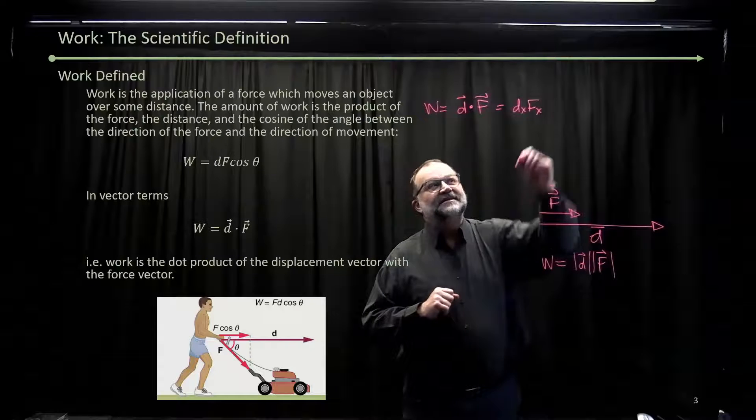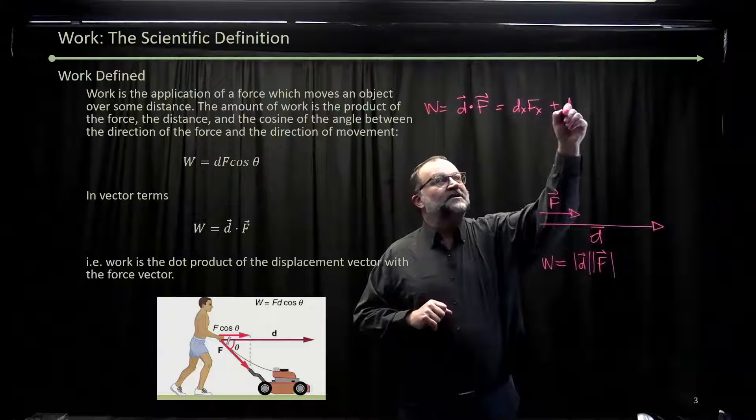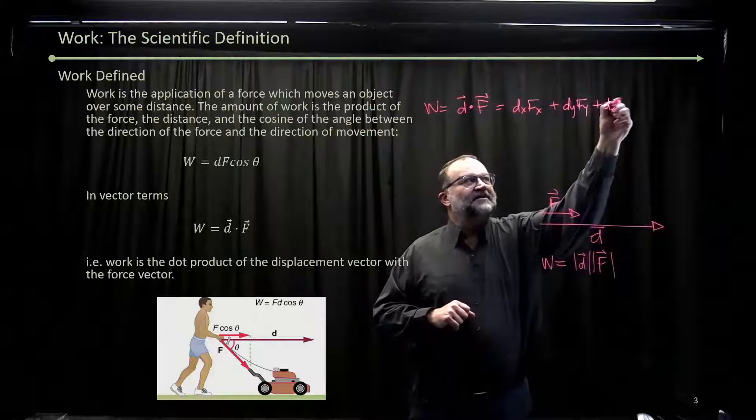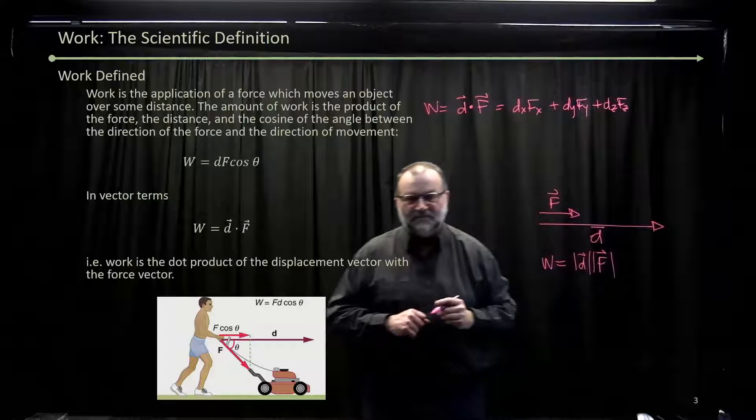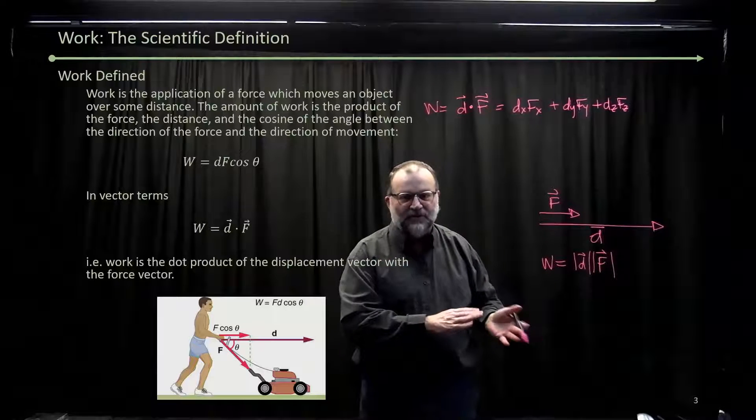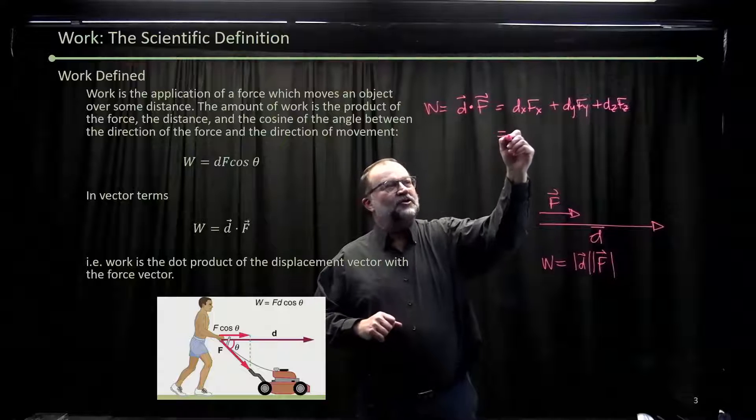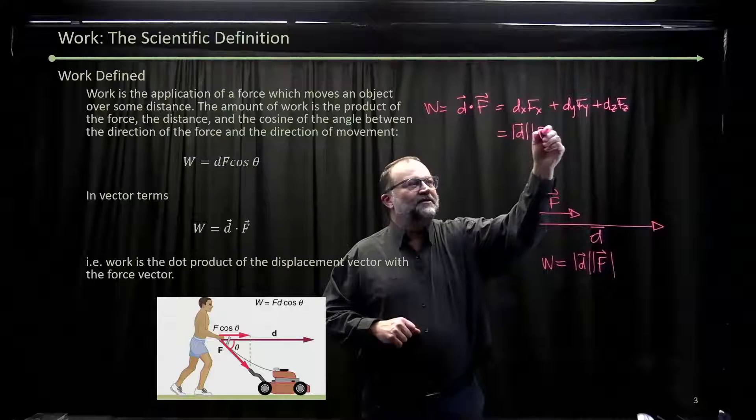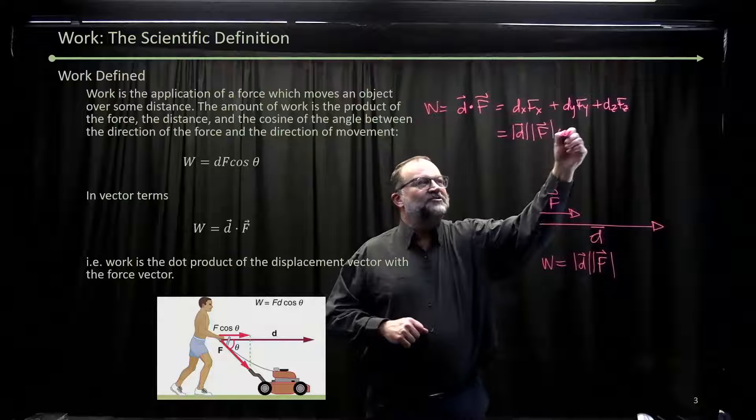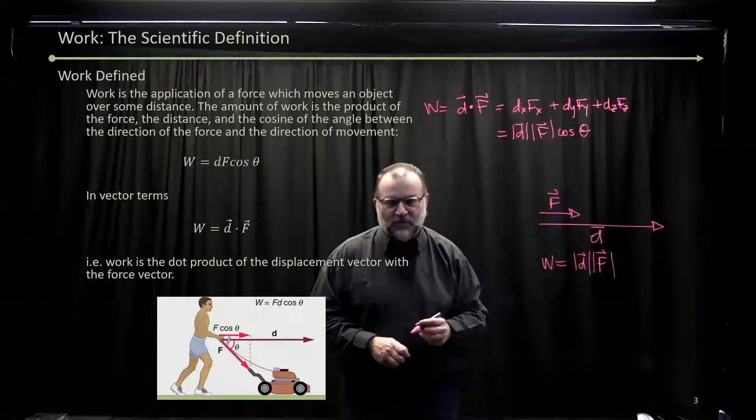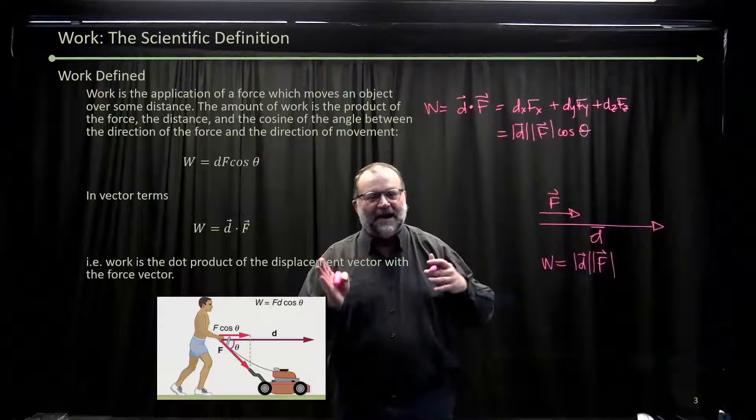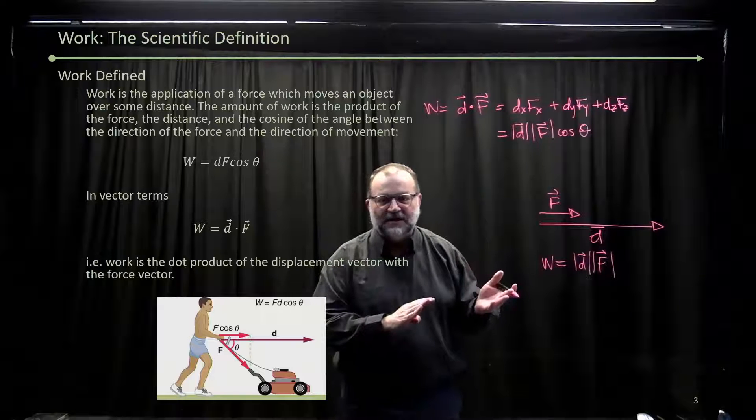So the dot product is dx fx plus dy fy plus dz fz. Now, when they're not in alignment, this is also equal to the magnitude of the two vectors times the cosine of the angle between them. So magnitude of the two vectors times the cosine of the angle between them.